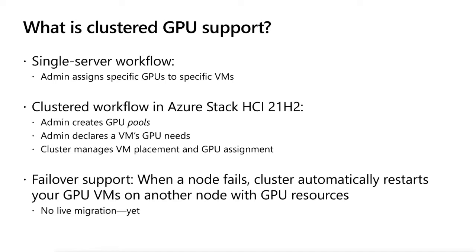An admin can assign a GPU to a VM. Before they assign it, they need to create a pool and change the configuration of the VM to say it needs to report to this pool to be able to get its GPU. The cluster manages the placement and the GPU assignment so that if a machine goes down, it will move the VM — shut it down — and try to move it to another host that has the same-name resource pool and then assign and start it over.